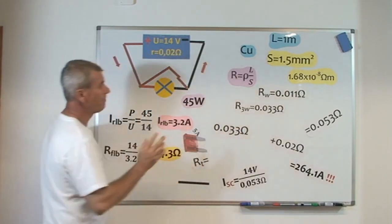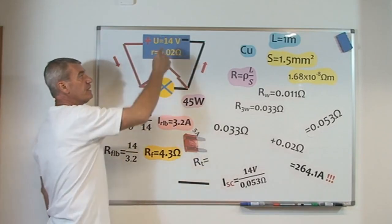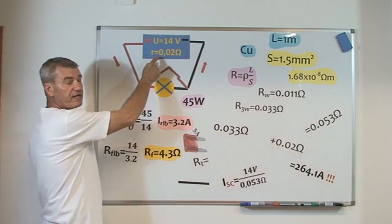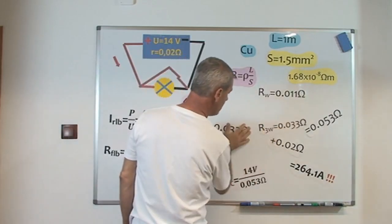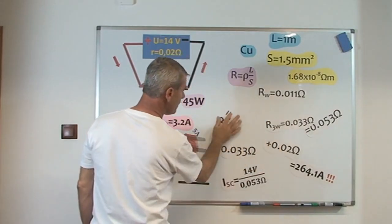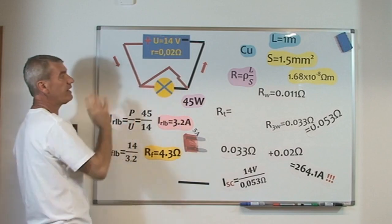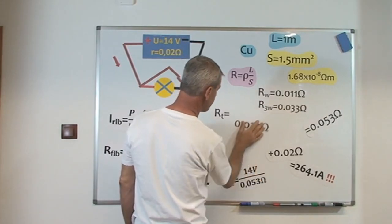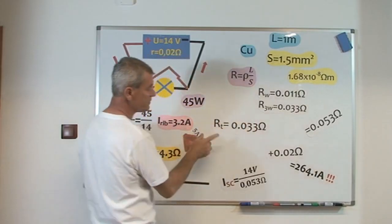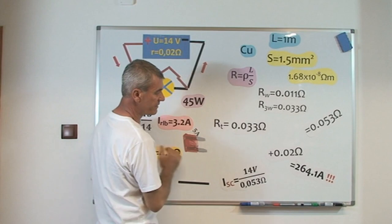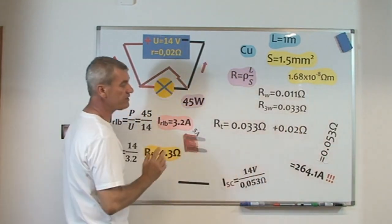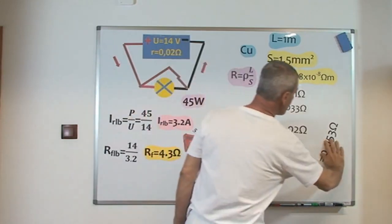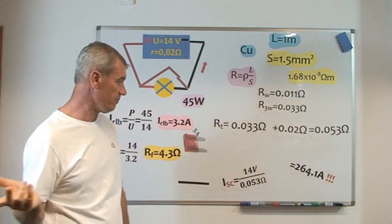And now, we need the whole electrical resistance in this circuit. For whole electrical resistance in this circuit, we need the internal electrical resistance of the battery, electrical resistance of the battery, and electrical resistance of the wires. Electrical resistance of the wires is 0.033 ohms plus 0.02 ohms, internal electrical resistance for battery, equals 0.053 ohms.